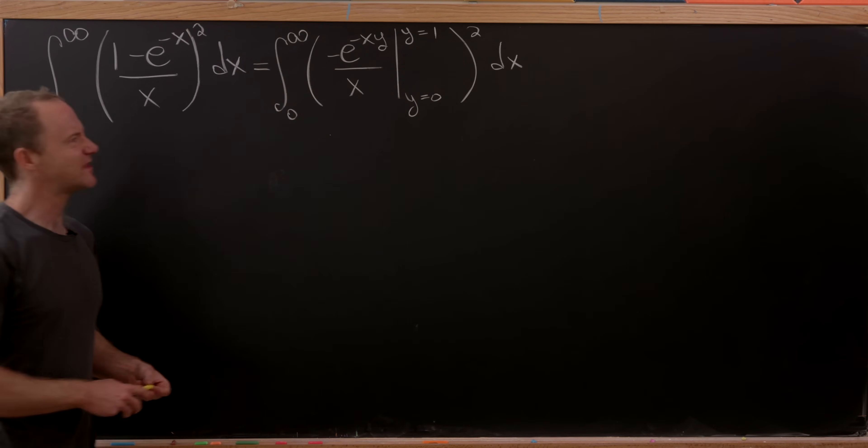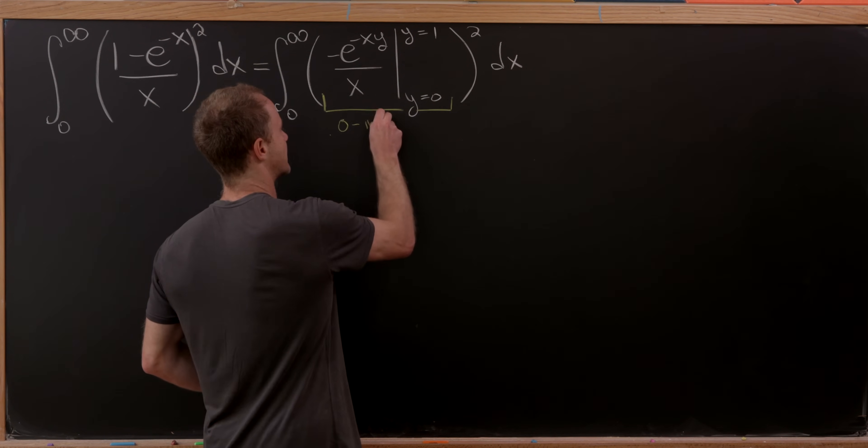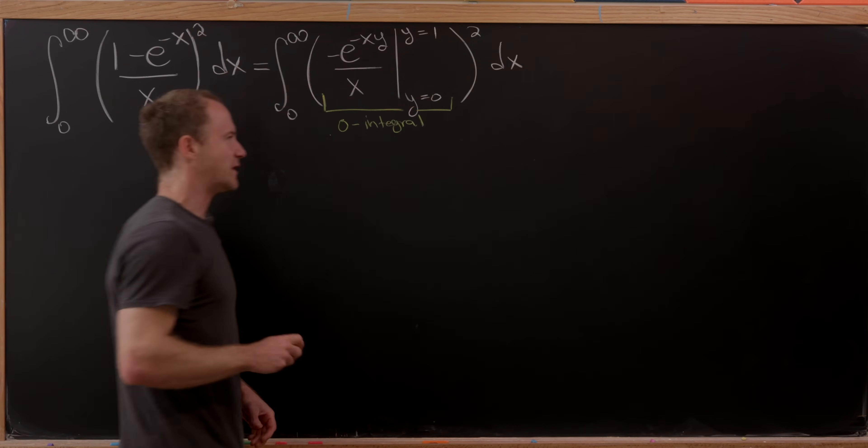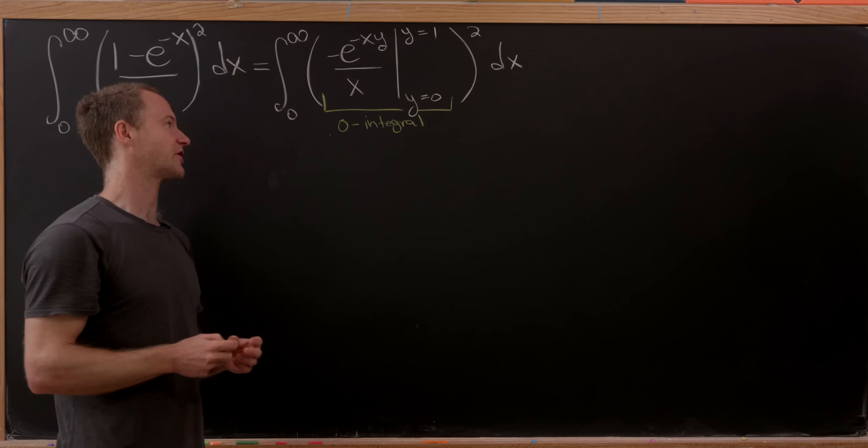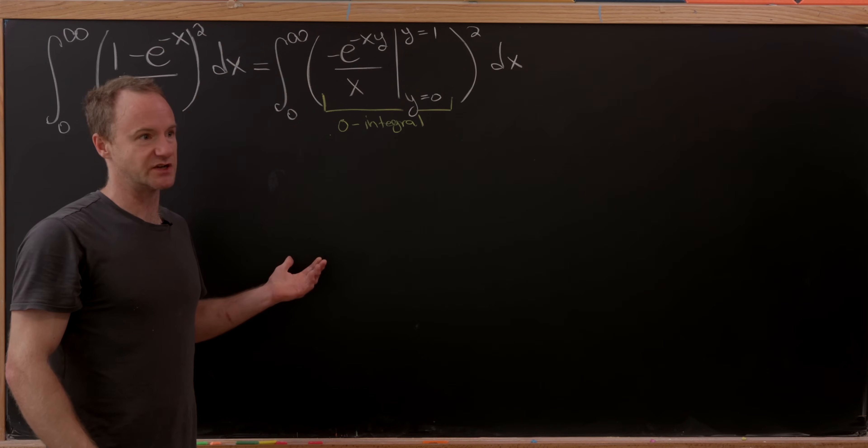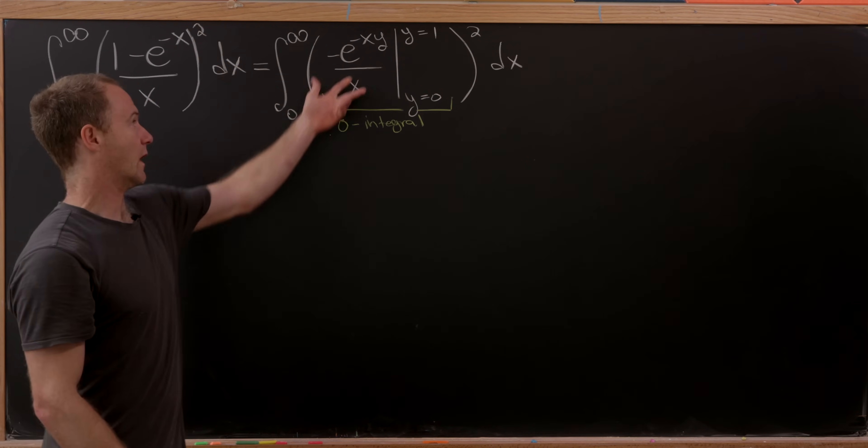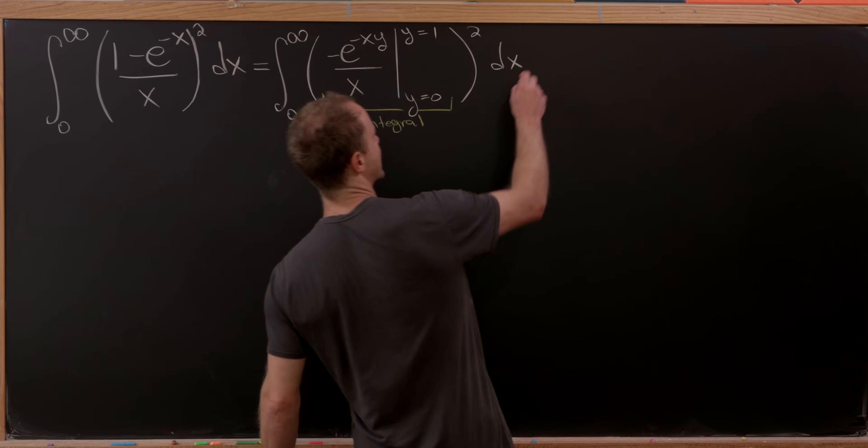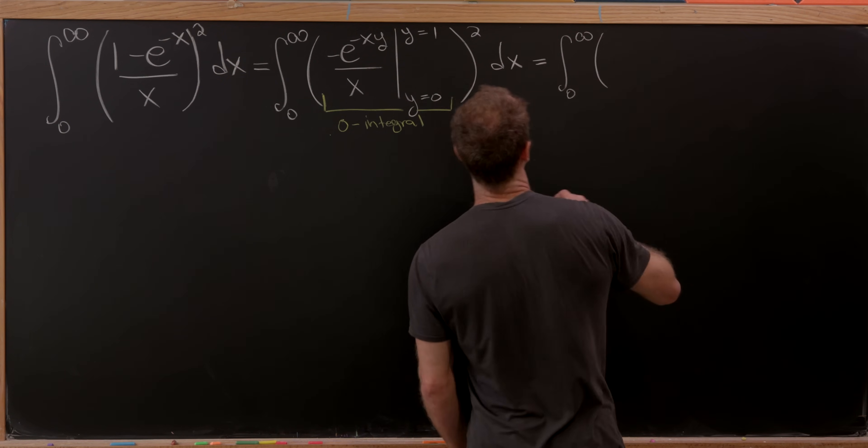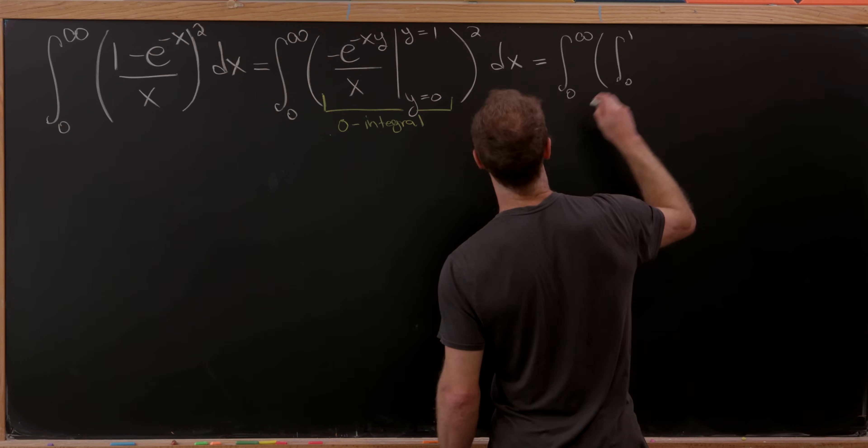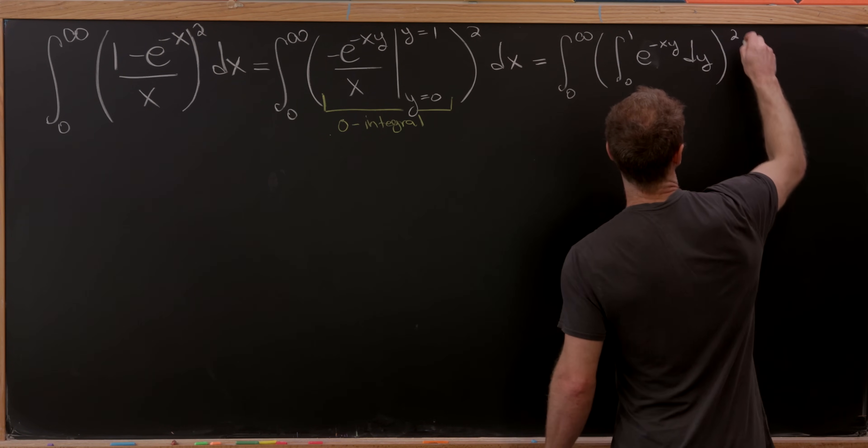So I like to think about this sort of object right here, this sort of evaluation, as a zeroth integral. And we can pass from a zeroth integral, the evaluation, to a first integral by applying the fundamental theorem of calculus. And that means that we can just take a derivative and then replace this with the integral from 0 to 1 of this function. So let's see what we have after doing that. That'll give us the integral from 0 to infinity, and then inside of that integral, we'll have the integral from 0 to 1 of e^(-xy) dy quantity squared dx.